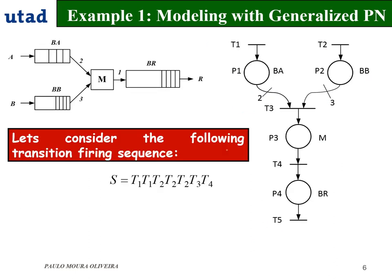We are going to consider a possible transition firing sequence. We fire T1, which gives us one token in P1. Fire T1 again, and we get two tokens. Fire T2 three times, and we get three tokens in P2. Now we have enough components to assemble the first product R. When we fire T3, we withdraw two tokens from P1 and three tokens from P2, and deposit one token in P3, meaning the machine is assembling part R.